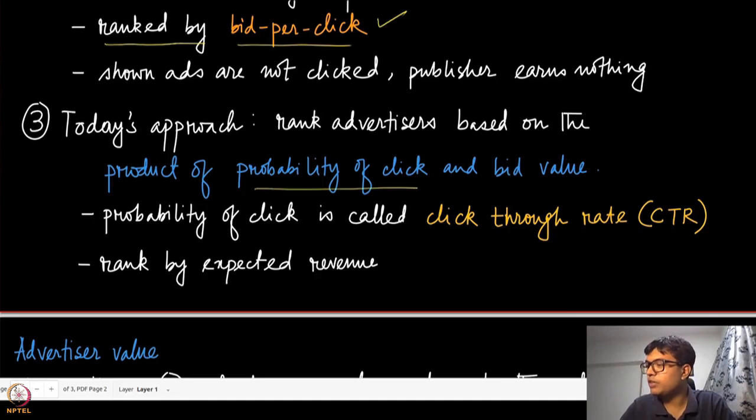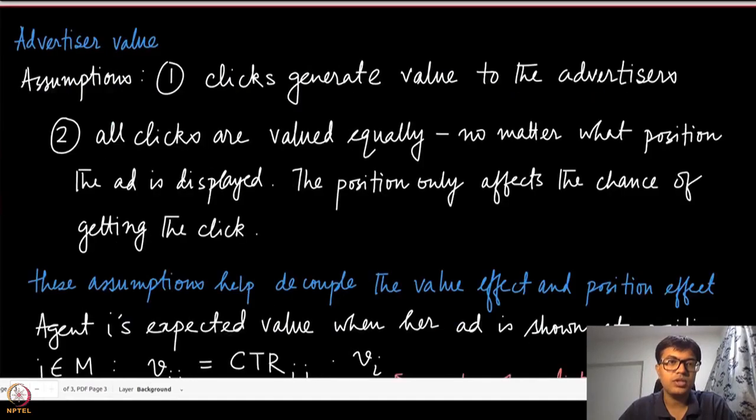This probability of getting a click is known as the click-through rate, CTR for short. When you take the probability of a click and the bid value, this is the expected revenue you are going to get. When the agent is getting that click, it is paying the publisher that amount of bid value. That is the expected revenue when you multiply the CTR with the bid value.